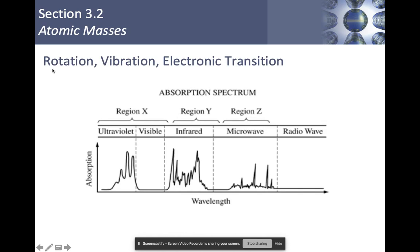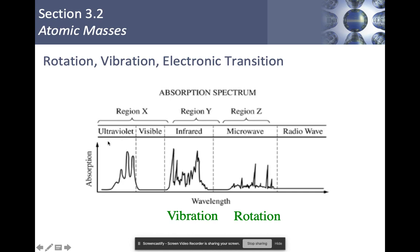If I were to allow an atom to absorb different types of radiation, different things happen. Microwaves cause a molecule to rotate. Infrared energy, which has more energy than microwaves, causes it to vibrate — meaning the bonds in the molecule start to stretch and compress. Ultraviolet light produces an electronic transition to a higher energy level, which then releases some form of radiation. This doesn't fit perfectly with section 3.2, but it needed to be inserted somewhere.